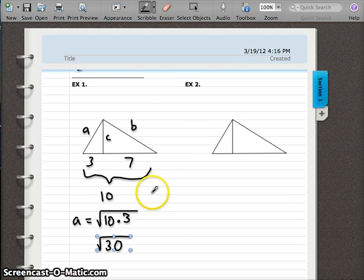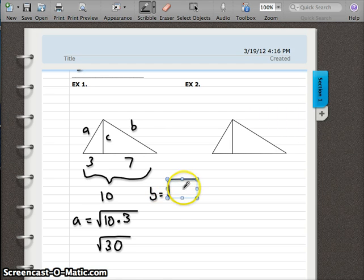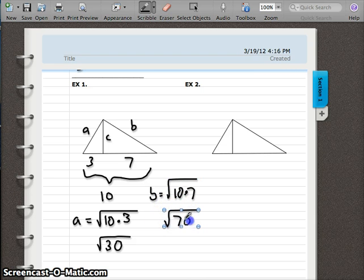If I solve for leg 2, my formula was leg 2 is equal to the geometric mean of the total base, so 10 again, times the corresponding base, so base 2, so 7. Well, again, 10, factors of 10 are 5 and 2. We have another prime number, 7, so I can't do anything but rewrite it as a product. Leg 2, or B, is equal to the square root of 70.